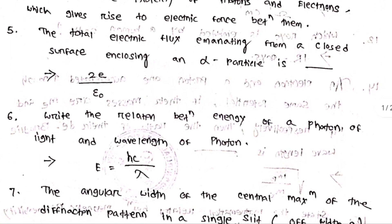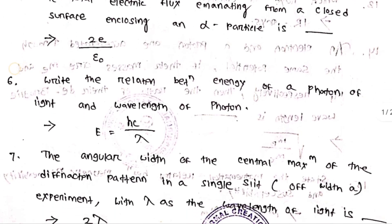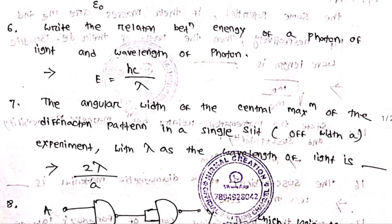The total electric flux emitting from a closed surface enclosing an alpha particle is 2e divided by ε₀. Write the relation between the energy of a photon and the wavelength of the photon: E = hc/λ.